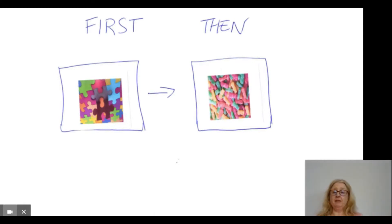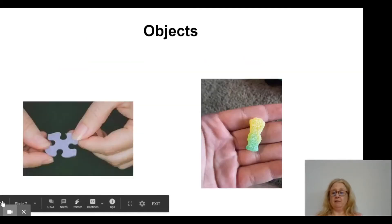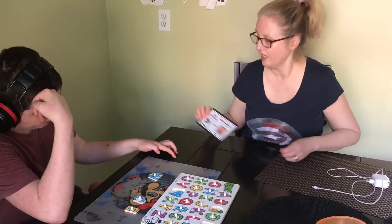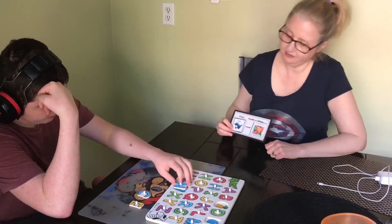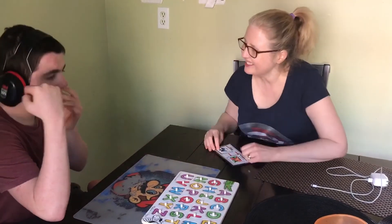Just remember, you don't have to have a fancy laminated first-then board like the one I'm holding up here. You can simply print the words 'first' and 'then' on a piece of paper with the pictures that you found. Or you can make it even easier and literally just hold up the two objects — have a puzzle piece in one hand and say 'first puzzle,' then have the candy in your other hand and say 'then candy.' Jacob, first puzzle, then sour patch kid. Great doing your puzzle.